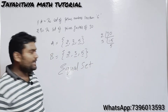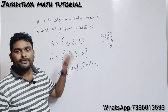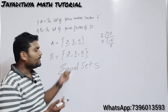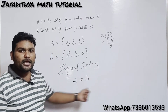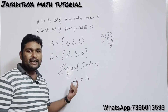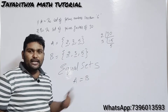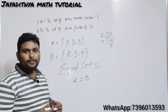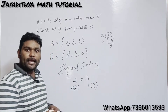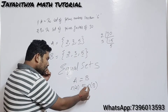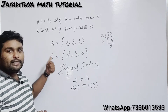Since each and every element of set A is present in set B and each and every element of set B is present in set A, with no extra elements, we can say that A and B are equal sets. We represent this as A = B. What can you say about the cardinal numbers? Since the elements are the same, n(A) and n(B) are also equal.